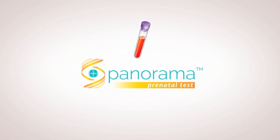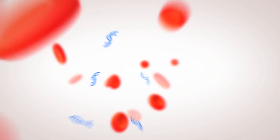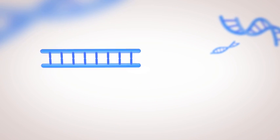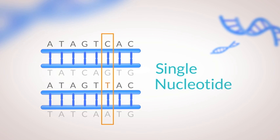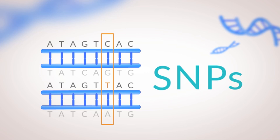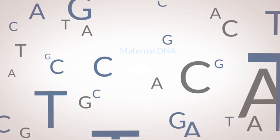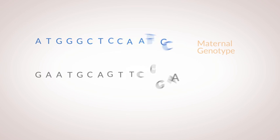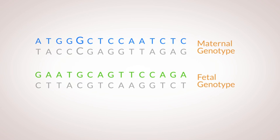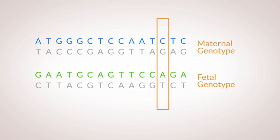Once the lab receives the sample, the DNA is amplified on a sequencing machine, which allows for analysis of the specific parts of DNA that are unique to each person. These parts are called single nucleotide polymorphisms, or SNPs. The Panorama test looks at SNPs from both the mother and fetus. By looking at these SNPs, the test can determine parts of the mother's genotype as well as parts of the fetus's genotype.